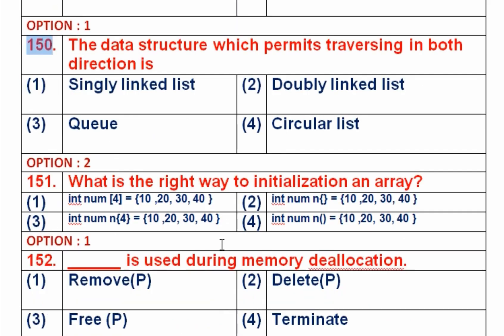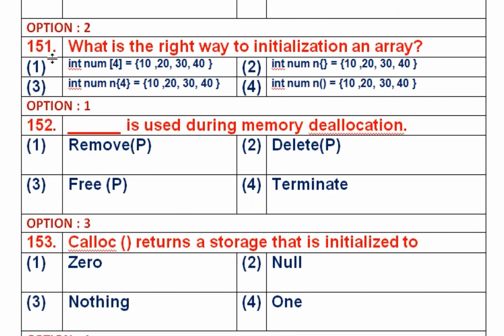Question number 150: The data structure that permits traversal in both directions is called — option 1 is singly linked list, option 2 is doubly linked list, option 3 is queue, option 4 is circular list. Both directions means double way. A doubly linked list allows traversal in both directions. Its node structure consists of three parts: a data part, a forward pointer, and a backward pointer. So option 2, doubly linked list, is the right answer.